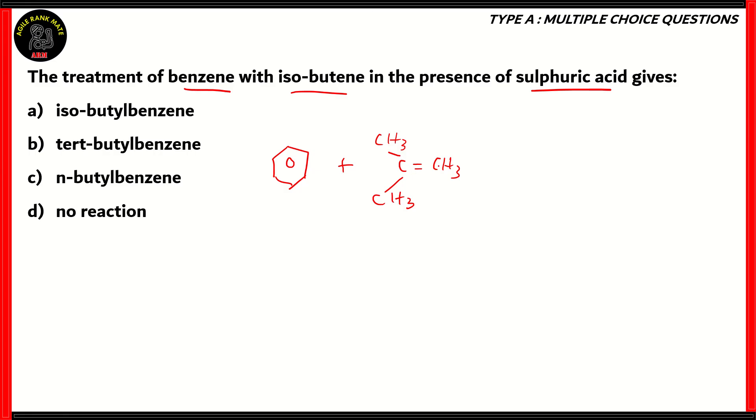Basically, we have a carbon having a double bond with CH2, and then having single bonds with other methyl groups. So you have CH2 double bond C, CH3, CH3. So this is isobutene. Now we have benzene and isobutene. They are treated in the presence of sulfuric acid. This particular reaction is called an addition reaction.